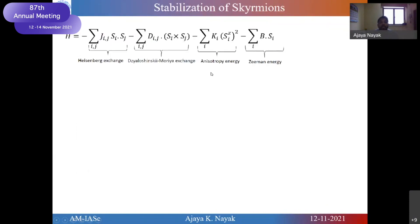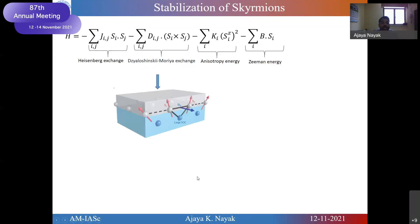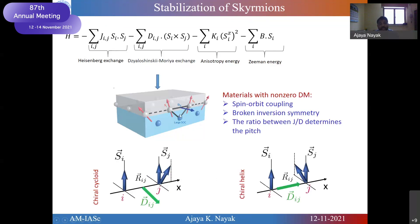To stabilize skyrmions, the type of skyrmions I have shown are called non-centrosymmetric skyrmions — they can be stabilized in non-centrosymmetric materials. In non-centrosymmetric magnetic materials, we can have the Dzyaloshinskii-Moriya interaction, which is the main component that helps in stabilizing skyrmions. The competition between the exchange interaction J and the DMI constant D determines the skyrmion size and helix period. Depending on the symmetry direction of D, we can get chiral cycloid or chiral helix, giving Bloch-type or Néel-type skyrmions.